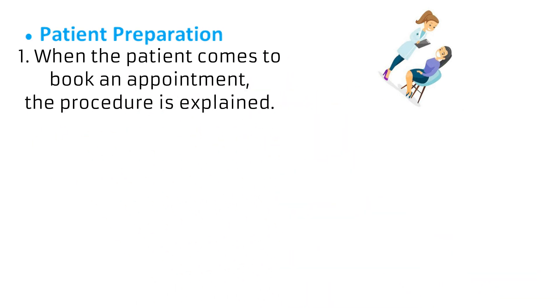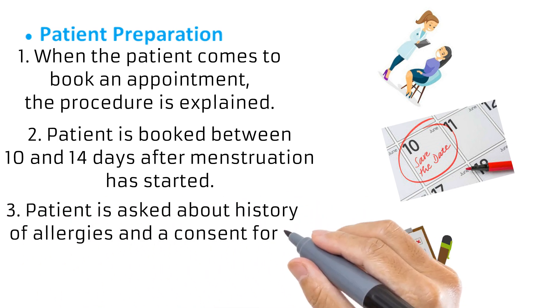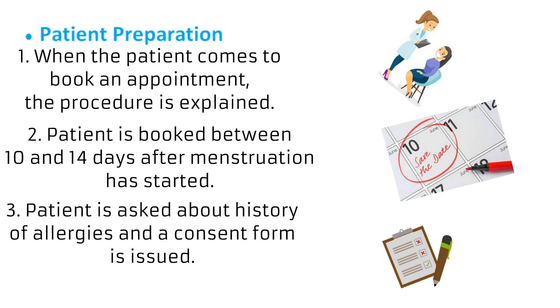How is a patient prepared for hysterosalpingography? HSG is not done on the spot — the patient comes on a prior date to book an appointment, during which the procedure is explained, questions are answered, and instructions are given, including avoiding sexual intercourse from that day until after the appointment. The appointment is scheduled between 10 and 14 days after menstruation starts — just before ovulation, when pregnancy is least likely and uterine tissue has healed. The patient is also asked about allergies, especially to iodine. A consent form is signed confirming the patient understands and agrees to the procedure.